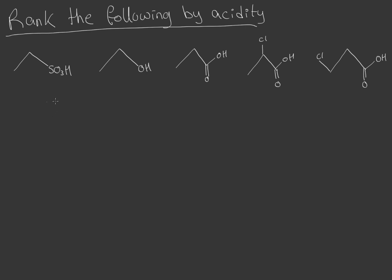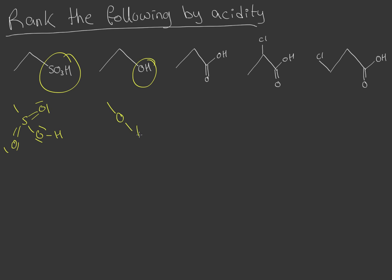This question is one of the most common organic chemistry questions — the task is to rank molecules based on their acidity. First, we look at the functional groups given. We have a sulfur connected to three oxygens with lone pairs, an OH group, a carboxyl group (carbon double-bonded to oxygen with a hydroxyl), and versions of the carboxyl group that have chlorines attached.